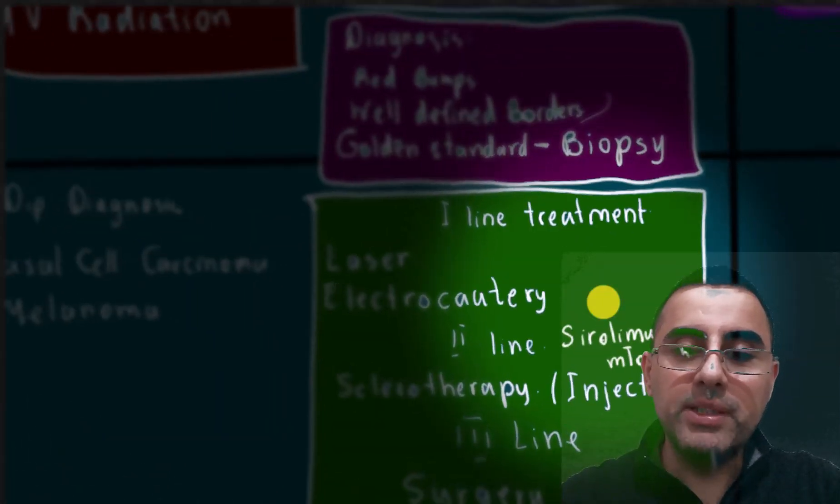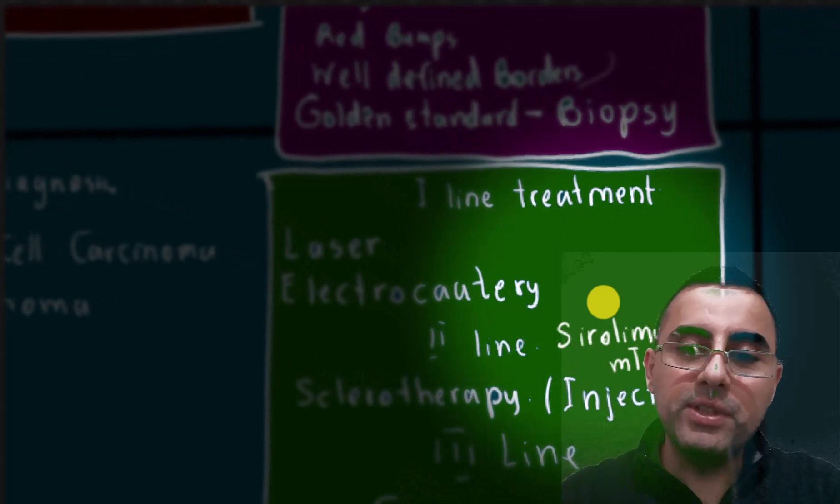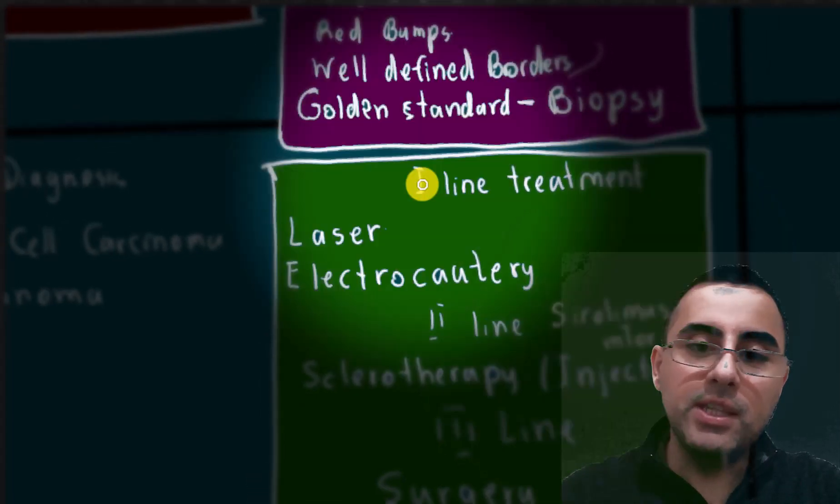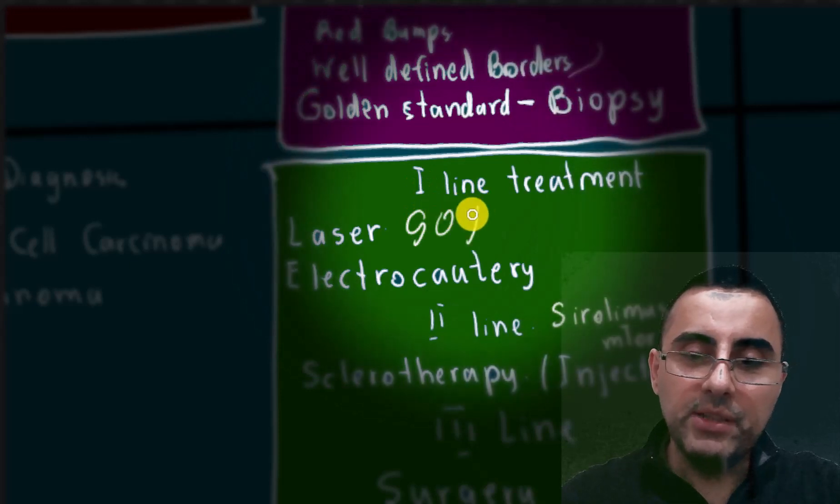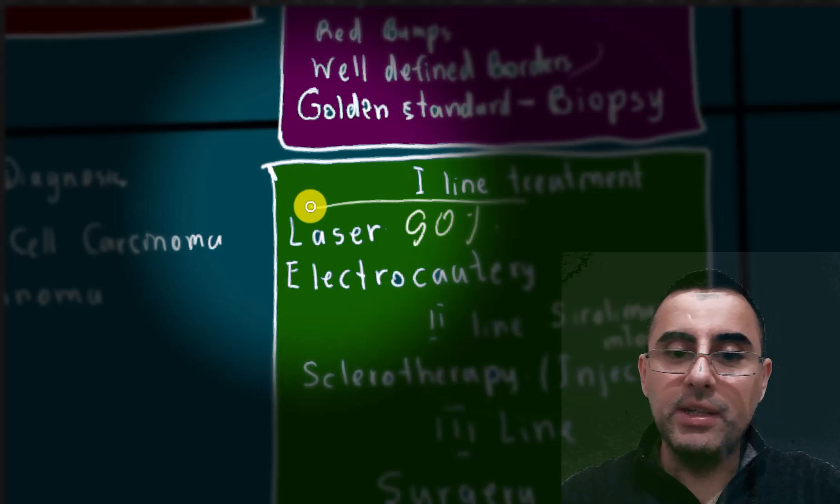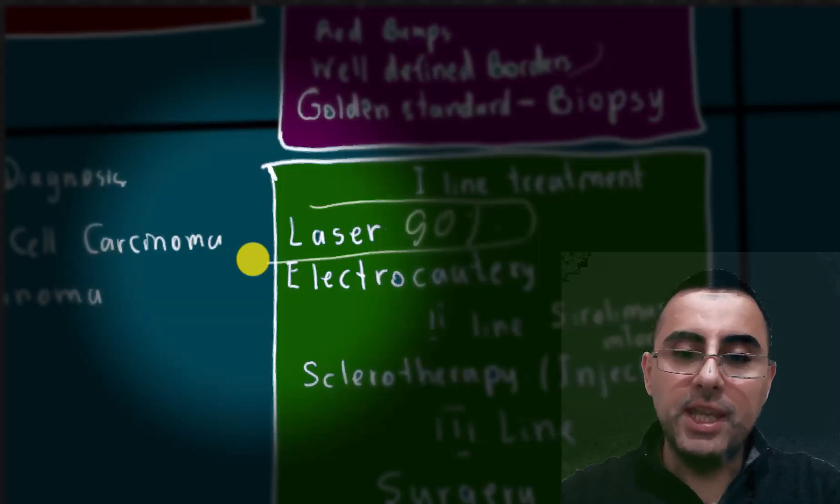Now, what's the treatment? The first-line treatment of angiomas is laser treatment. Laser treatment is a safe and effective way with more than 90% effectiveness. So it's really first-line treatment in any means.